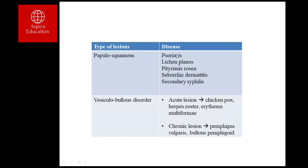Vesiculobullous disorders can be acute or chronic. Acute forms occur over days to weeks and include chickenpox, herpes zoster, and erythema multiforme. Chronic lesions develop over weeks to months and include pemphigus vulgaris and bullous pemphigoid.